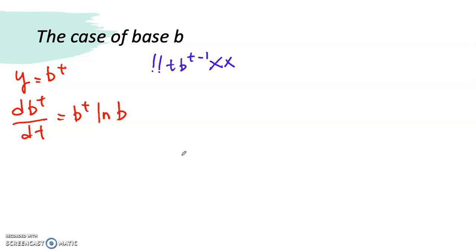Now, for logarithm having the base b, we have y equals to log base b of t. So, d log_b(t) over dt is equal to 1 over (t ln b).